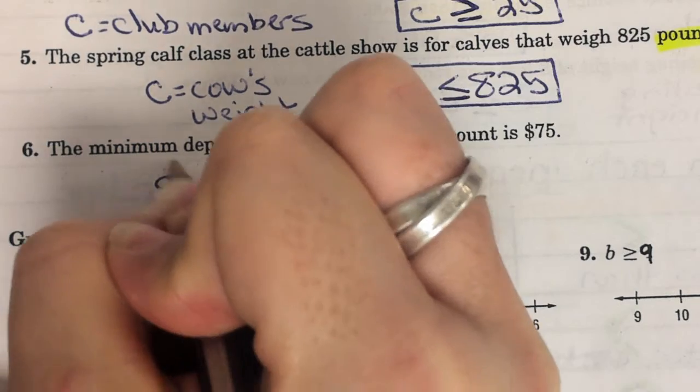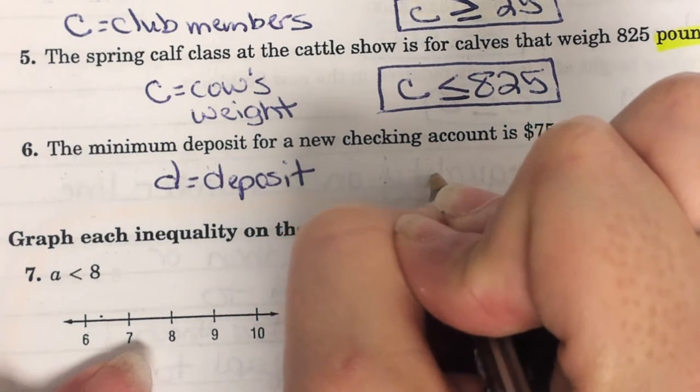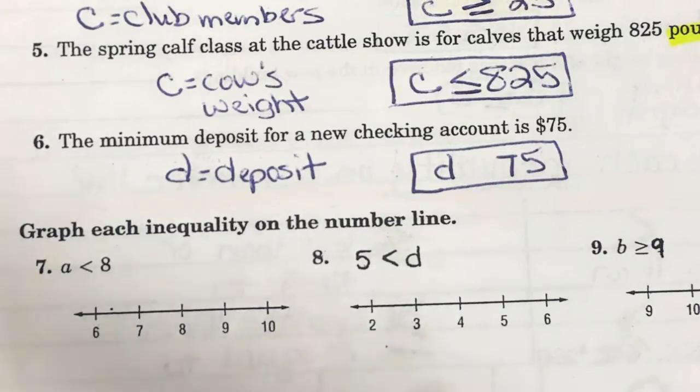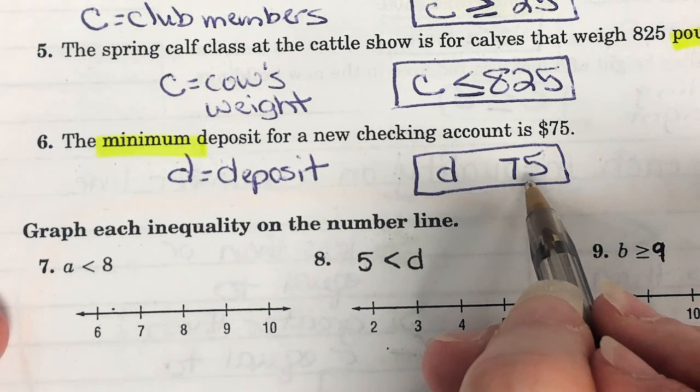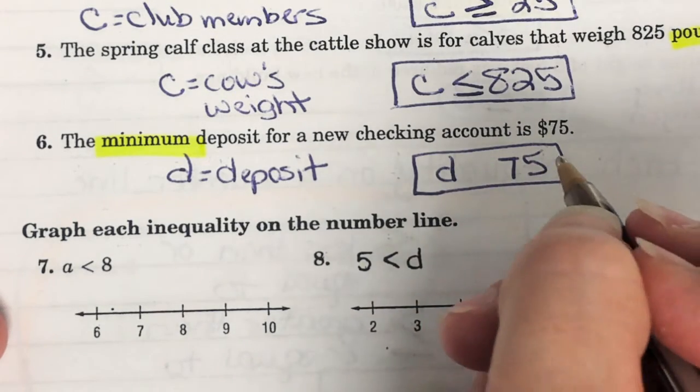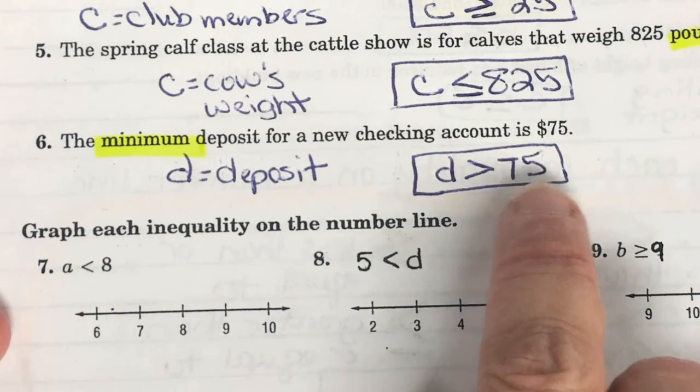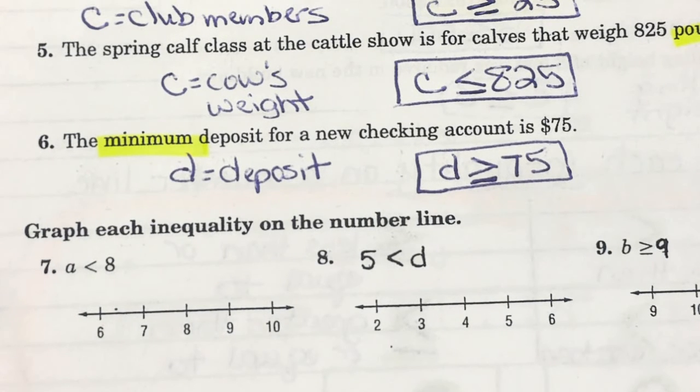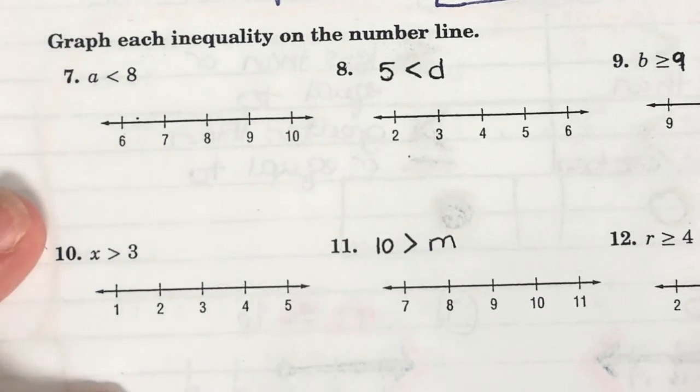Number six. The minimum deposit for a new checking account is $75. So, what we don't know is deposit. Can you use M for minimum deposit? D is on one side. 75 on the other. Minimum is the greater. Is minimum smallest or biggest? Small. Minimum. Maximum is the biggest. So, minimum is the smallest. The minimum deposit is 75 or more. Right. And, I'll be honest. There's a ton of those. That's the way checking accounts are. Minimum. Maximum. Different things like that.